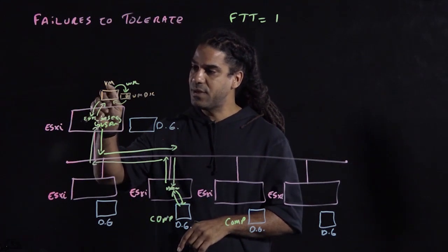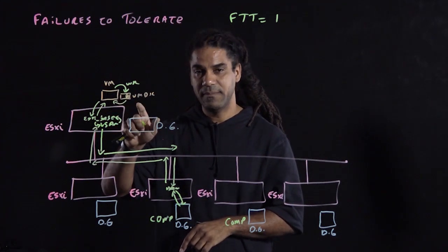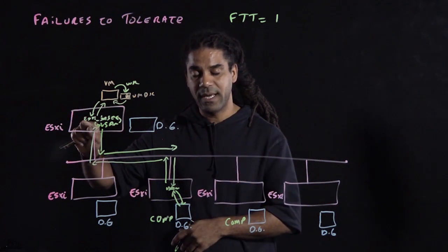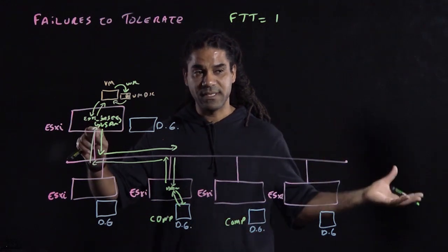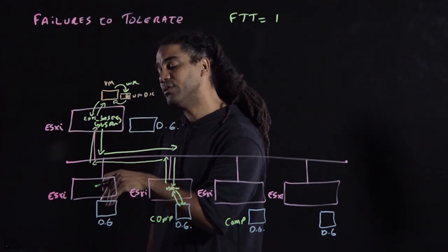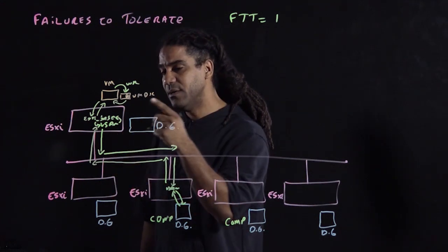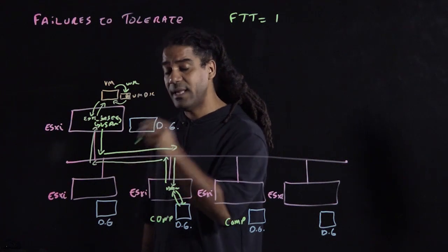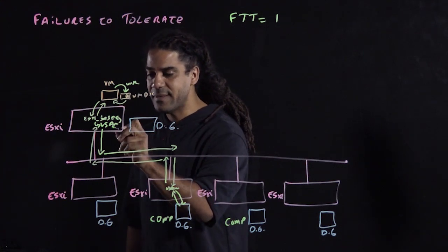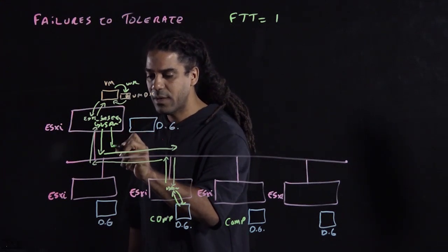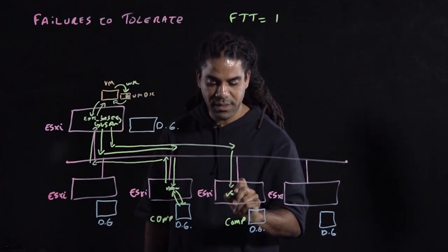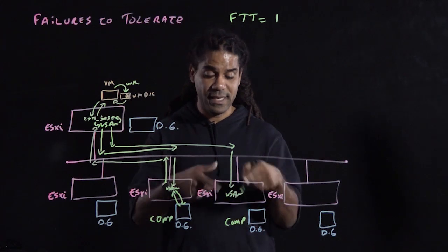So when that VM executes a write to the VMDK, the write goes to the ESXi base — the hypervisor — who then realizes that it's for vSAN, and calls the vSAN process to come and process this. When the vSAN process comes in and processes this, it sees that there are two replicas for this object, so it needs to send two write commands: one to the first component, and the second one over the network to the second component, which is processed by the vSAN process in that host.